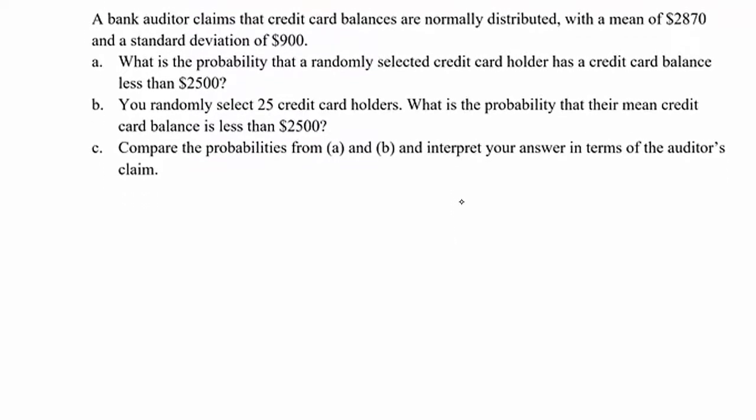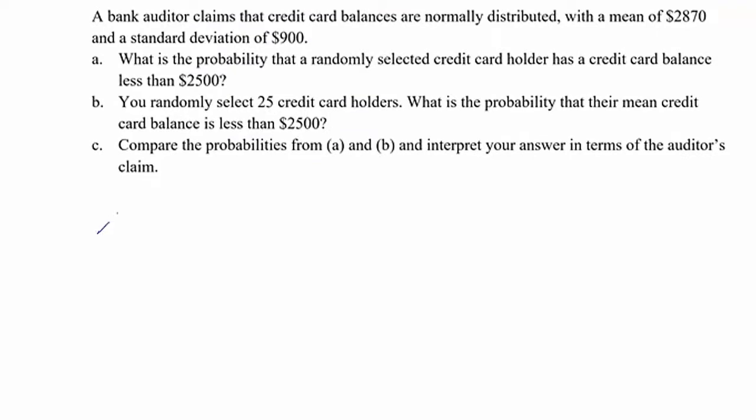I can summarize mu equal to $2870 and then sigma equal to $900. Now, look at A. What is the probability the randomly selected credit card holder has a credit card balance less than $2500? So, if you look at A, there is no sample size given, right?